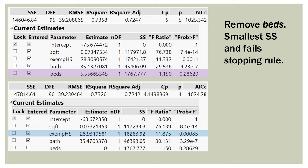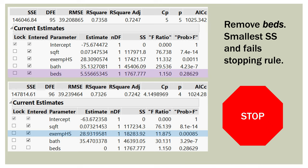Now what's the next one? So we removed beds. You can see that the entered checkbox is empty. The next one is exemplary high school. So it has the sum of squares of 18283. That's the next smallest. F ratio of 11.875. So that stays in the model. And now we stop. That's as far as we can go. All the variables that are in there meet our stopping rule. And therefore that's our final model.